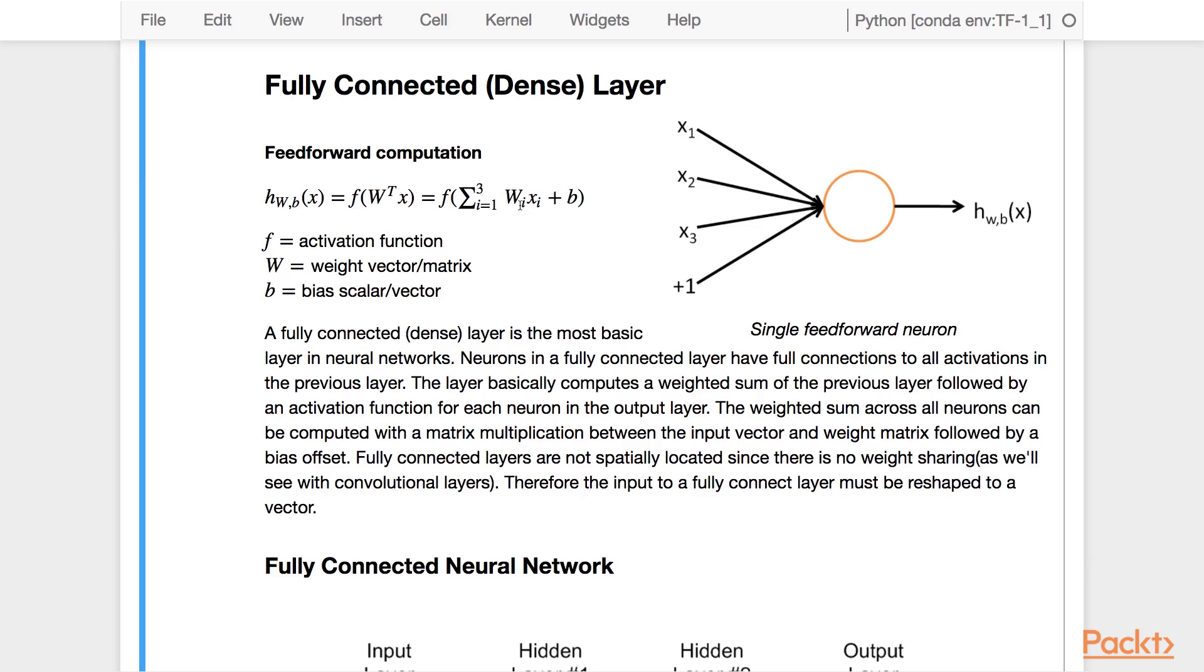As you can see here, this equation represents the computation for a single neuron. The weighted sum across all neurons can be computed with a matrix multiplication between the input vector and the weight matrix, followed by a bias offset.